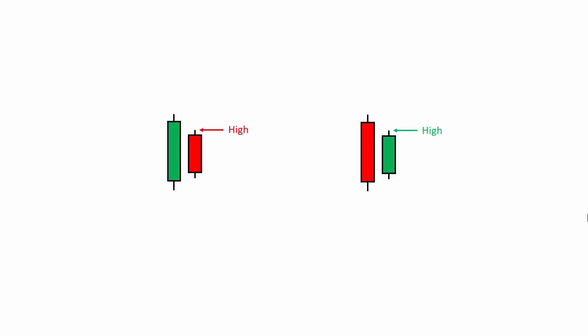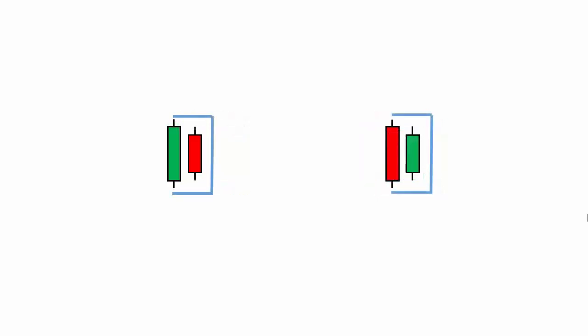Inside bar candlesticks are basically identified by two back-to-back opposite directional candles, where the current candlestick's high and low are covered by the high and low of its preceding candlestick. Or more simply, the most recent candlestick stays inside the total range of its previous candlestick.